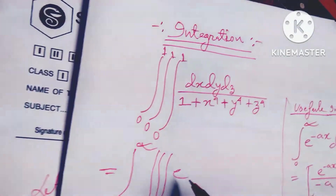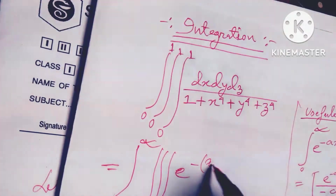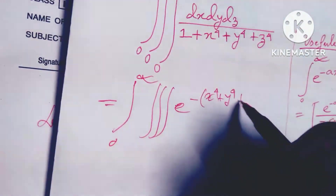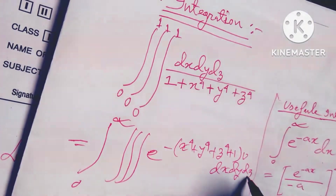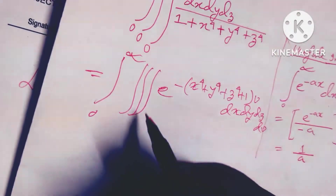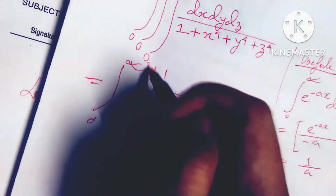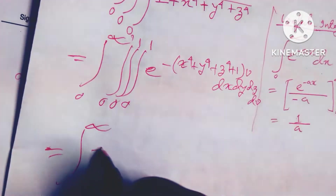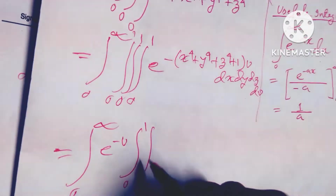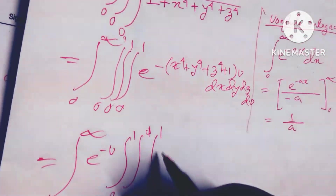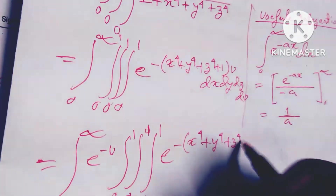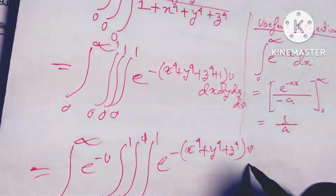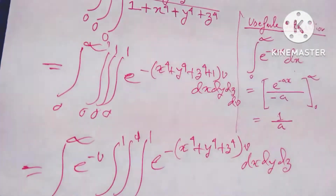Using this formula, I can write the triple integral from 0 to infinity as: integral of e to the power minus (x to the power 4 plus y to the power 4 plus z to the power 4 plus 1) times v, into dx dy dz dv. This formula you must remember because I apply it here. Now I can write this equation in the form with e to the power minus v, from 0 to 1 in x, y, and z, with e to the power minus (x to the power 4 plus y to the power 4 plus z to the power 4) times v, dx dy dz.